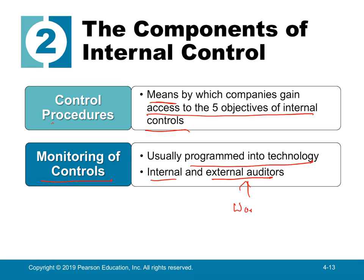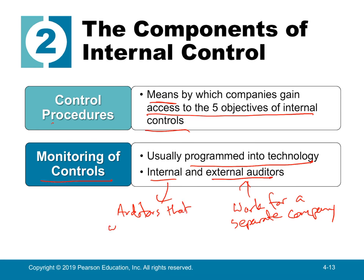External auditors work for a separate company, while internal auditors work at the company itself — like auditors who work at Apple. This can be an awesome career. You usually get to travel to all the different locations of a company, and for a company like Apple with locations in almost every country, being an internal auditor can be very rewarding if you enjoy traveling and making good money.